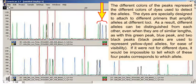The different colors of the peaks represent the different colors of dyes used to detect the alleles. The dyes are specially designed to attach to different primers that amplify alleles at different loci. As a result, different alleles can be distinguished from each other, even when they are of similar lengths, as with this green peak, blue peak, and two black peaks.